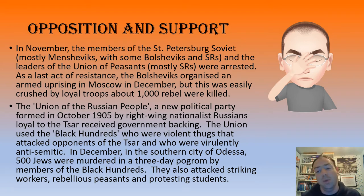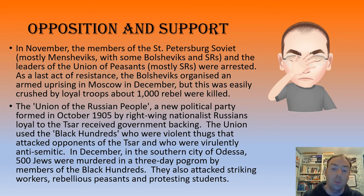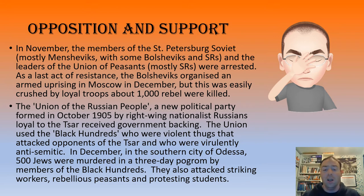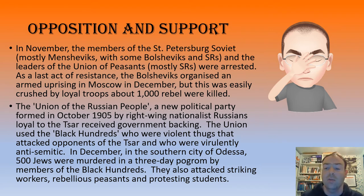The revolutionary side seemed to be petering out and the combination of concession and repression was working. The Tsar also had allies in a new rightist party called the Union of Russian People, formed in 1905 - right-wing Russian nationalists who got backing from the Tsar's government. They also used the Black Hundreds, violent thugs who attacked opponents of the Tsar and were horribly anti-Semitic. In December 1905 in Odessa, 500 Jews were murdered in a three-day pogrom, and they also attacked striking workers, rebellious peasants and students, smashing out the last remaining elements of the 1905 revolution rather effectively.